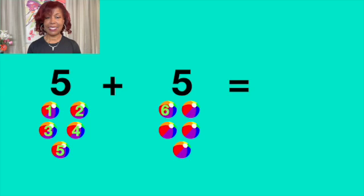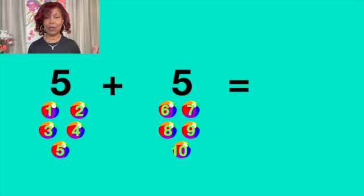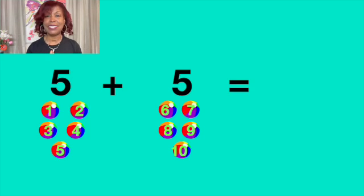Seis, six. Siete, seven. Ocho, eight. Nueve, nine. Diez, ten. Cinco más cinco igual a diez. Five plus five equals to ten. Diez, ten.